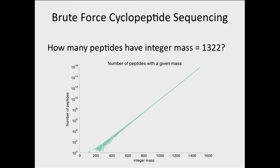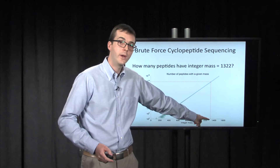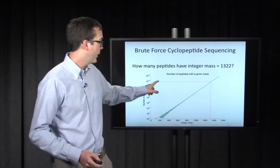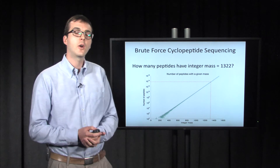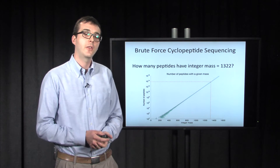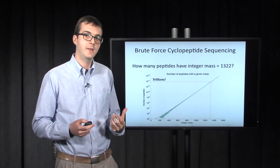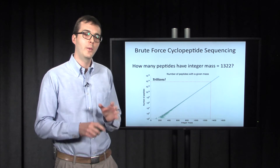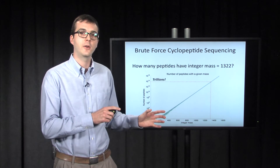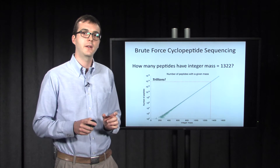Here's a graph showing integer mass of a peptide versus the number of peptides that have that mass. Looking at 1322, indicated by red lines, we go up from 1322 and over to find it's almost at 10 to the 14th. So the answer is trillions of different peptides have this mass — and that's not going to work. We don't want to consider trillions of different possibilities.